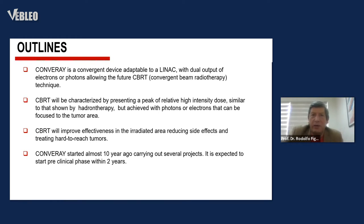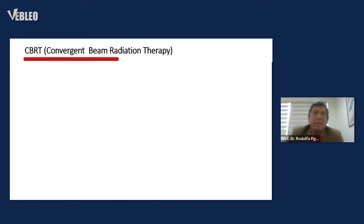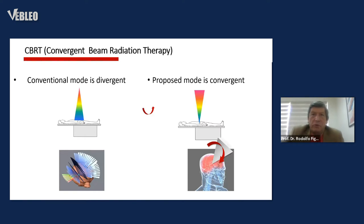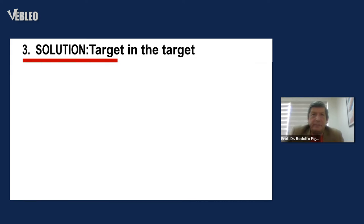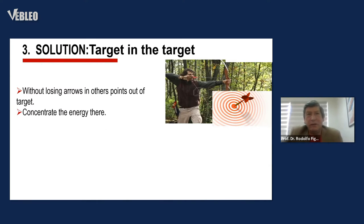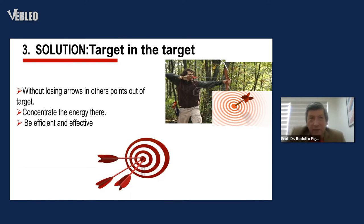CBRT will improve effectiveness in the irradiated area, reducing side effects and treating radio-resistant tumors. Conver-ray started almost 10 years ago, carrying out several projects, with preclinical trials planned within two years. In conventional mode the beam is divergent, while in the proposed mode it is convergent — targeting the tumor, concentrating the energy there, efficiently and effectively.